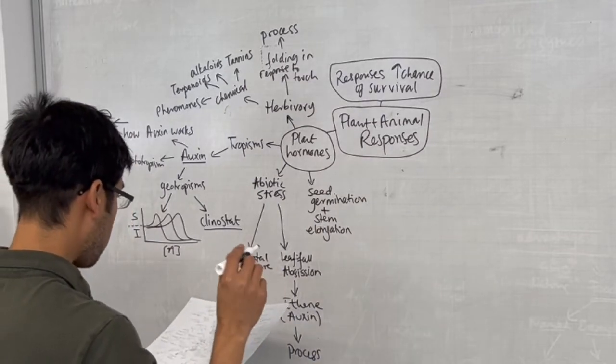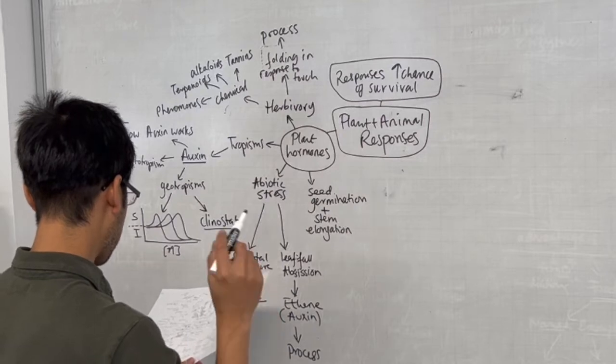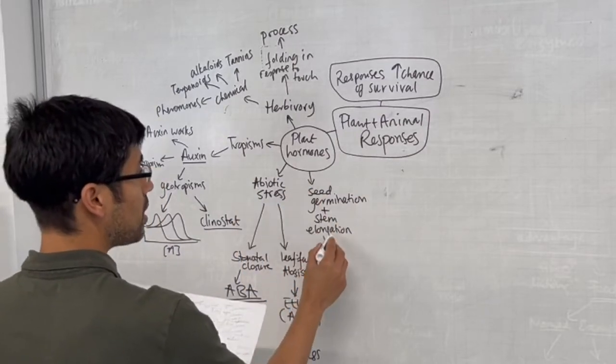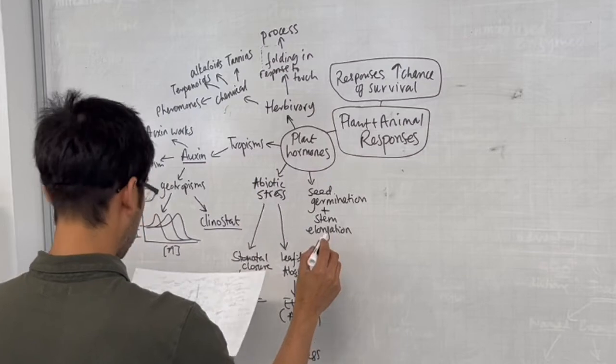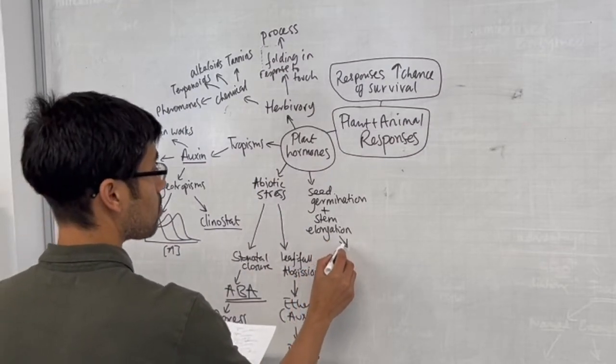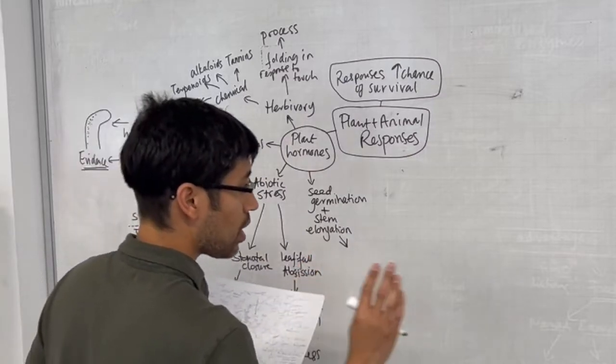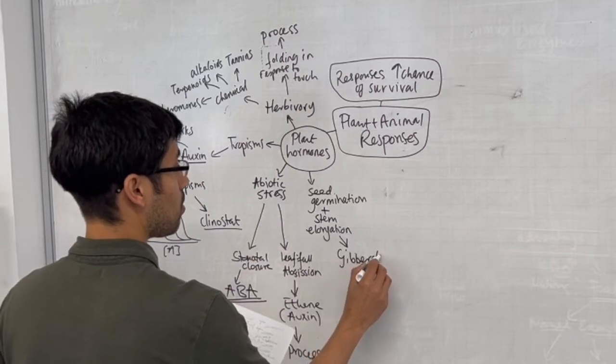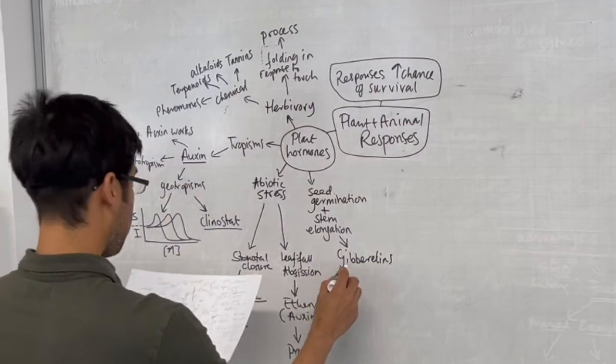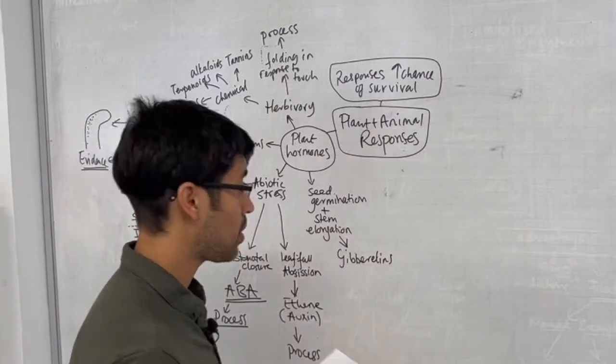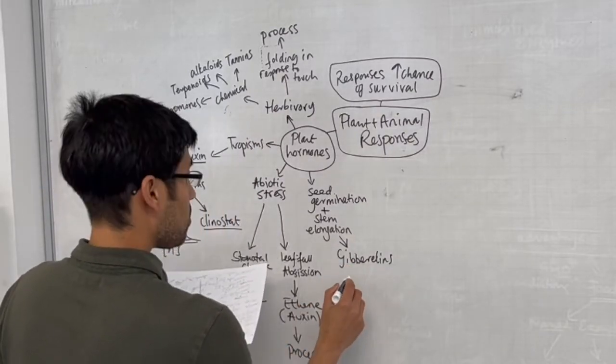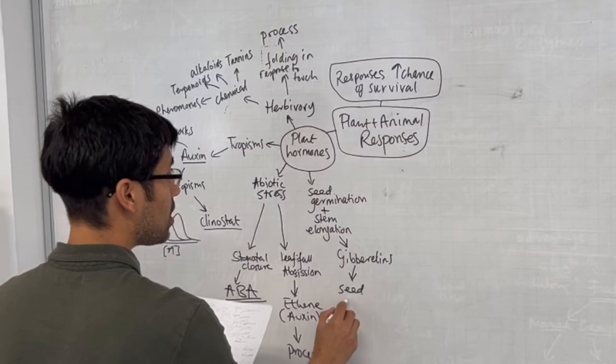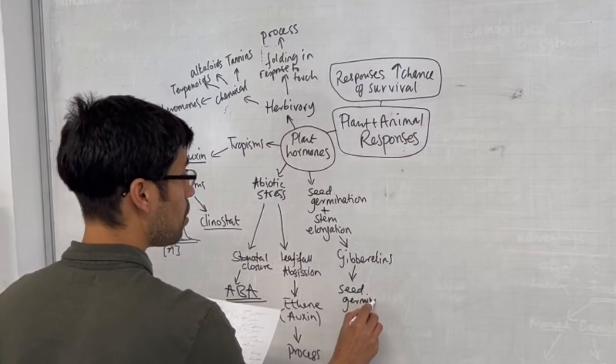We are then going to move on to seed germination and stem elongation. Seed germination and stem elongation are both carried out, or the primary actor in that process, is the gibberellin family of hormones. I do reserve the right to spell things incorrectly. It's my YouTube video. So gibberellins promote seed germination.